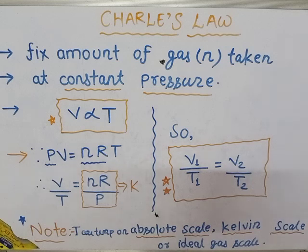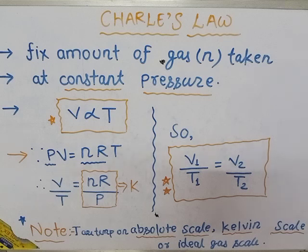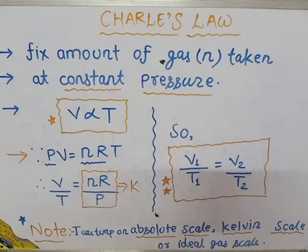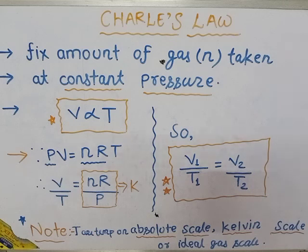From this we obtain the relation V1/T1 = V2/T2. This is the important relation of Charles law used to solve numerical problems. It is applicable to the same ideal gas — the same ideal gas will have one temperature and volume state, and another temperature and volume state. Three of the four values will be given and you have to find the fourth. Also note: temperature must always be taken in the Kelvin scale in physical chemistry.